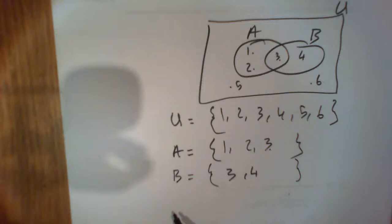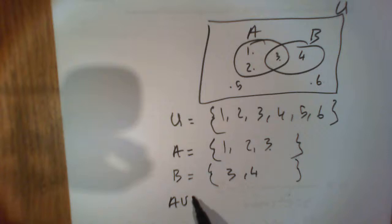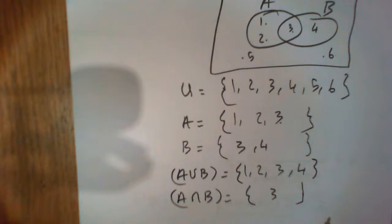That's three and four. Now let's define set A union B. That's going to be everything in A or B, so that's one, two, three, and four. The intersection of A and B, that's just going to be three. So so far so good, that's how far we are so far.